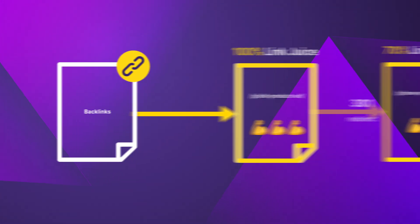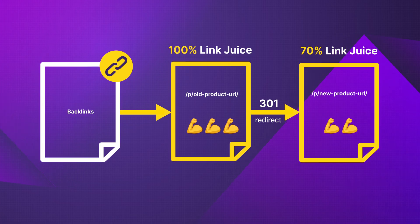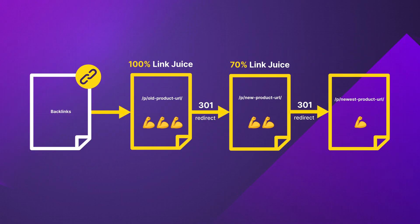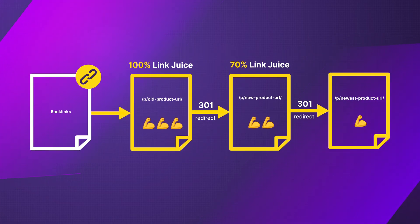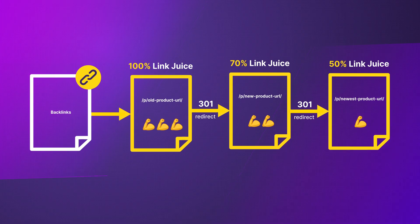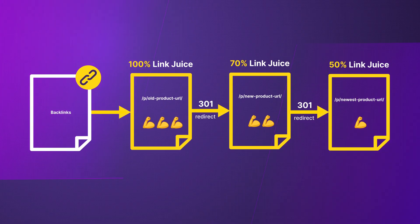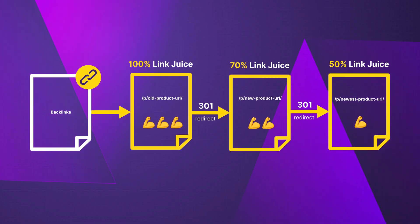If possible, try to avoid having multiple redirects in a row, because each time you do it, you lose 30% of the remaining link juice. If you have two redirects in a row — what we call double redirects — you are losing 50% of the link juice instead of only 30%.